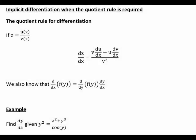In this recording we look at an example of using implicit differentiation in a case where the quotient rule is also required. First of all, let's recall what the quotient rule for differentiation is. It says that if we have z as a function of x divided by another function of x, then the derivative of z with respect to x is v times du/dx minus u times dv/dx divided by v squared. The same idea applies when differentiating with respect to other variables, such as t.